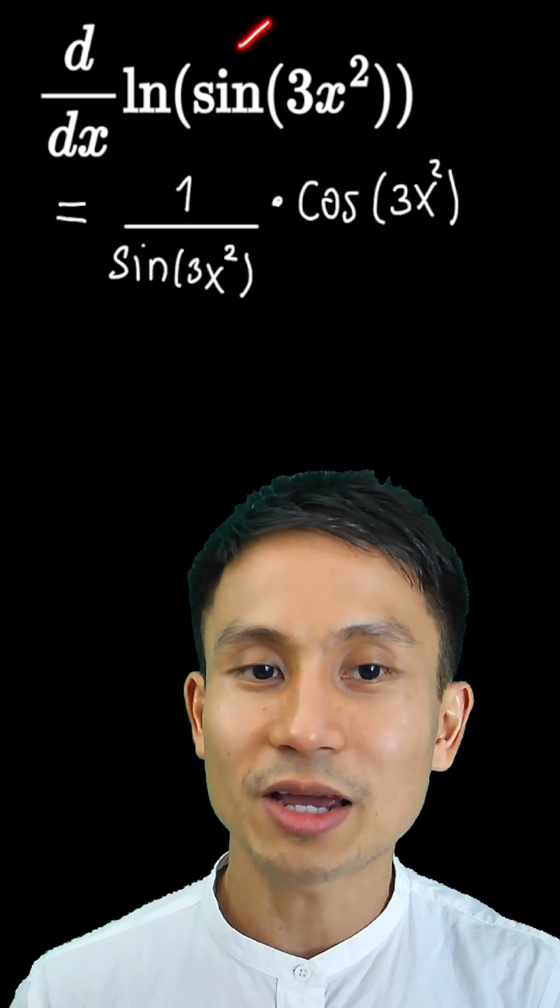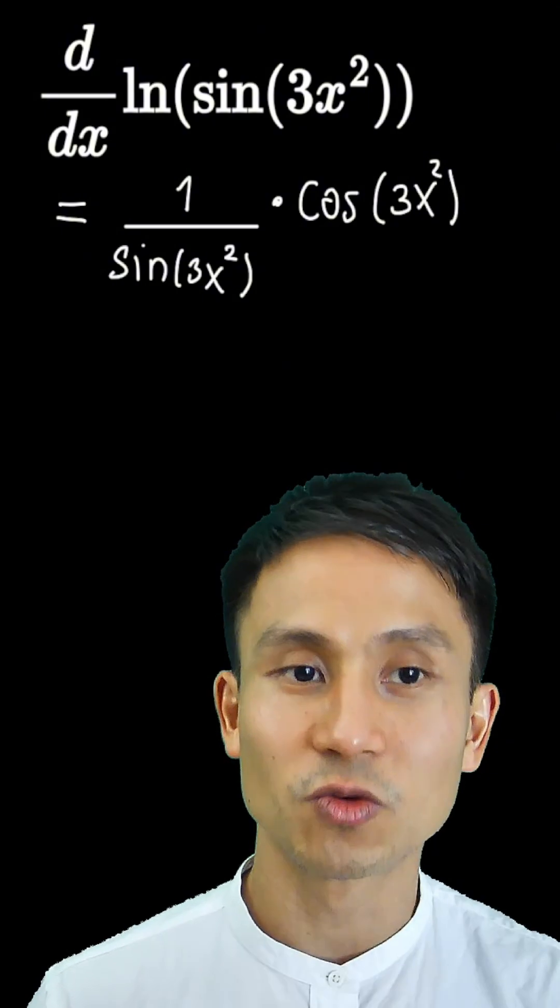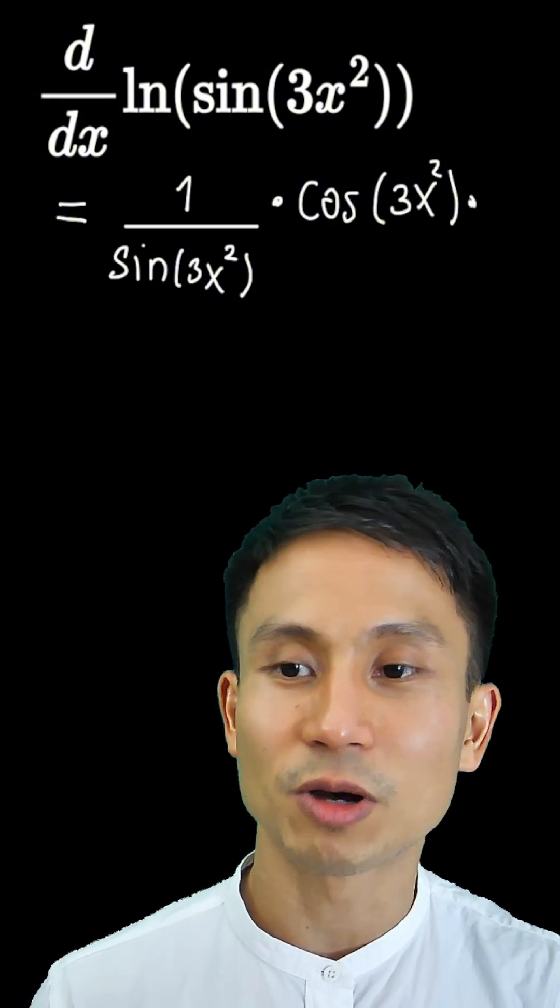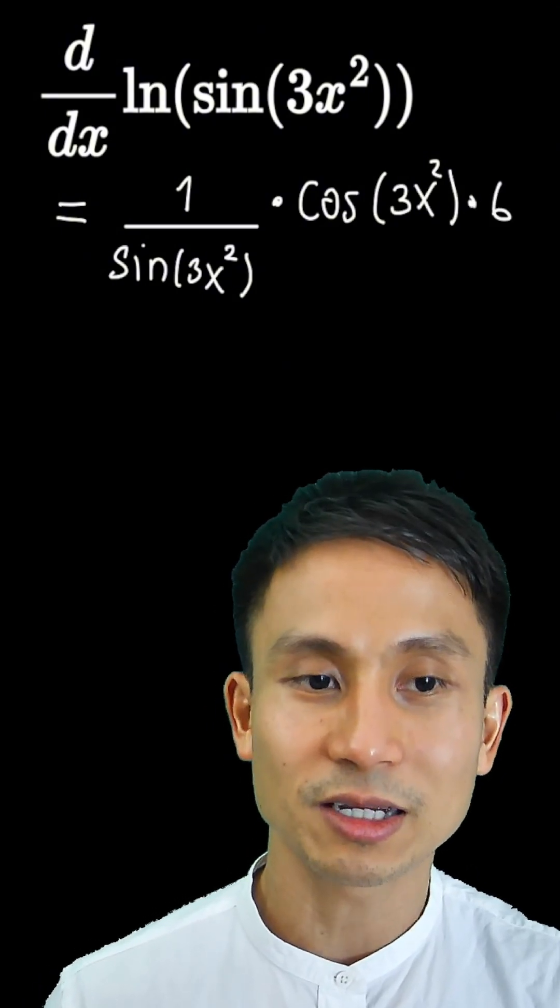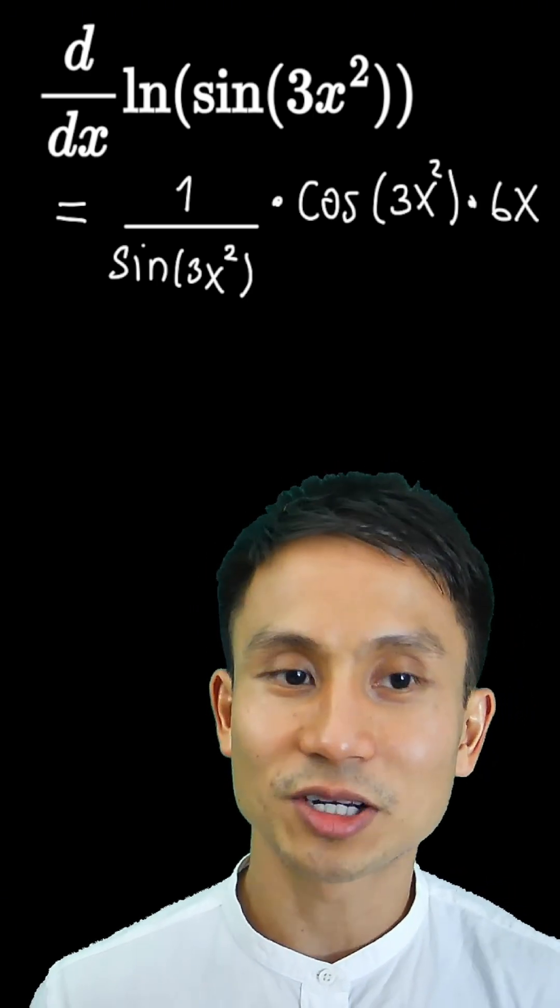Going another layer inside, we see a polynomial function 3x squared. So we're going to use the power rule there. Bringing the power down to multiply in front, we get 6. The power minus 1 is just x to the power of 1, so we don't need to write that. That is just done.